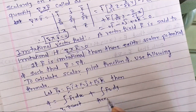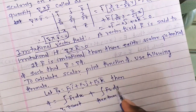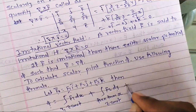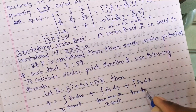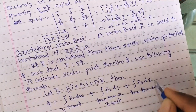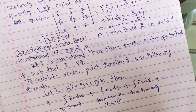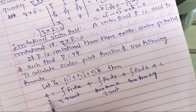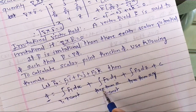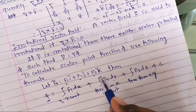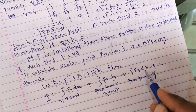Plus, take the integration of F₂ with respect to y, but only include the terms of F₂ that are free from x — taking z as constant during integration. Plus, take the integration of F₃ with respect to z, but only include the terms of F₃ that are free from x and y, then add constant of integration C. This formula is very important for finding scalar point function phi.